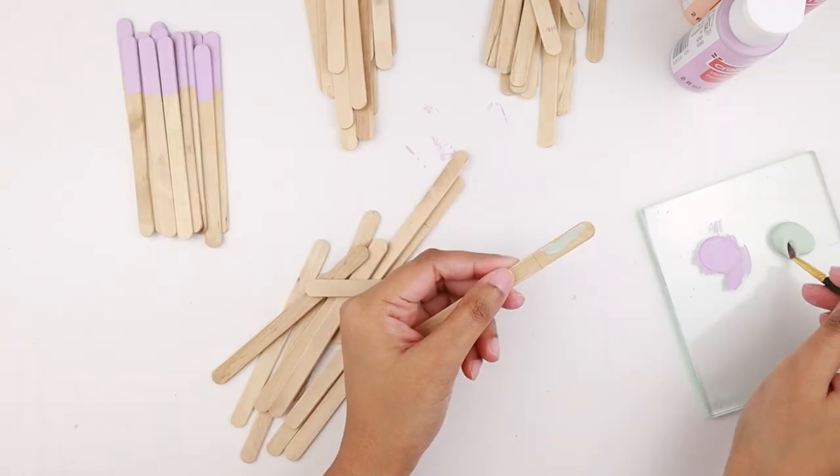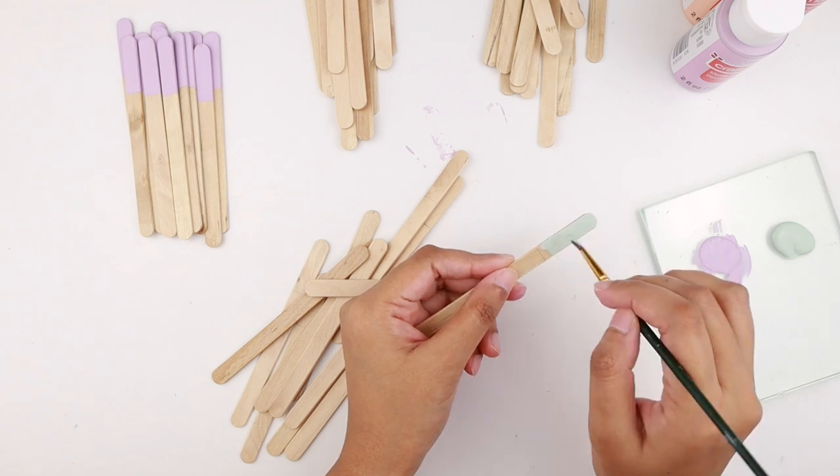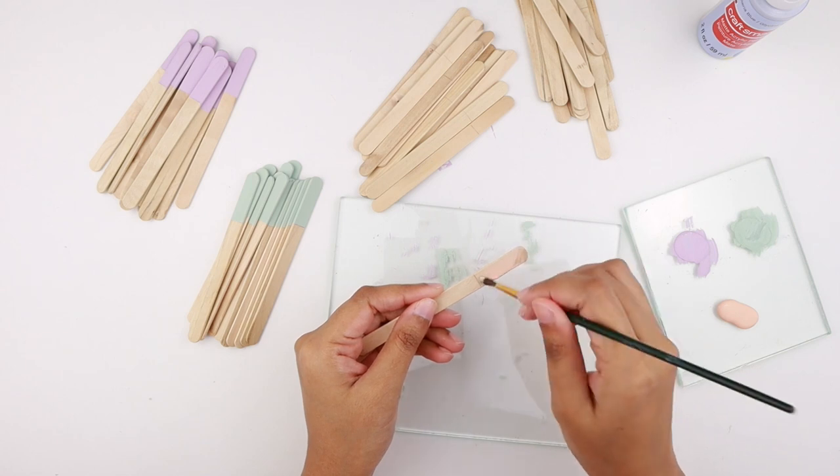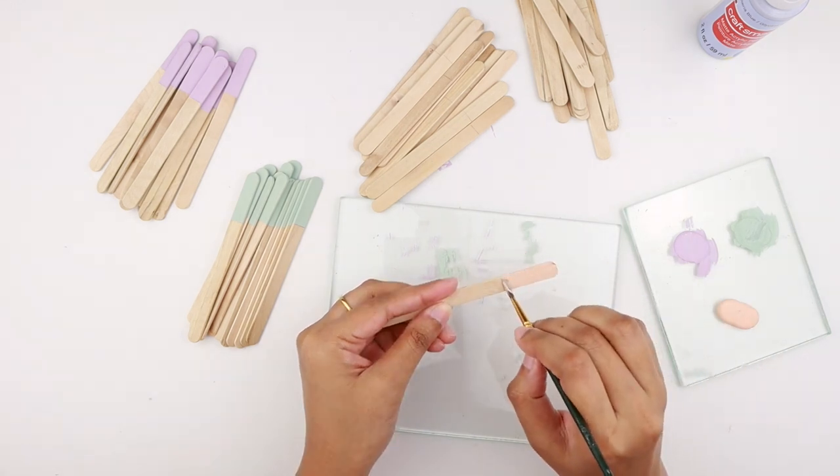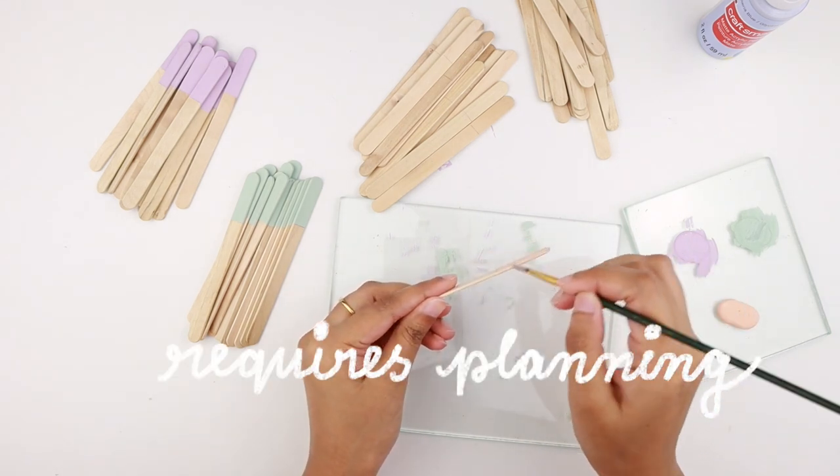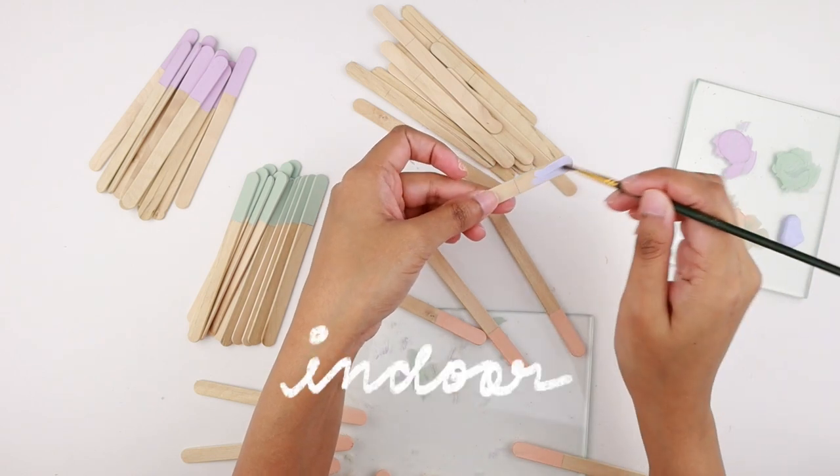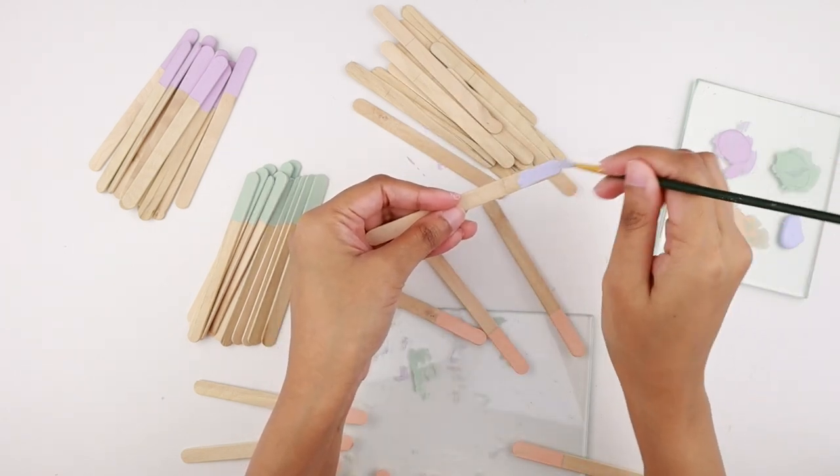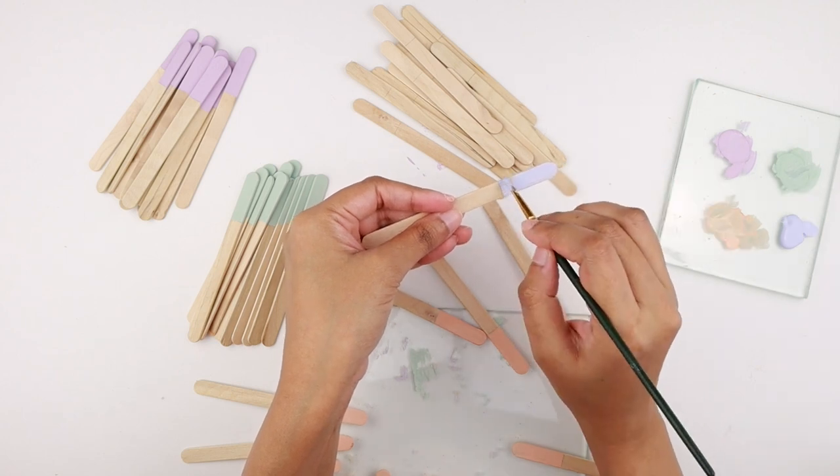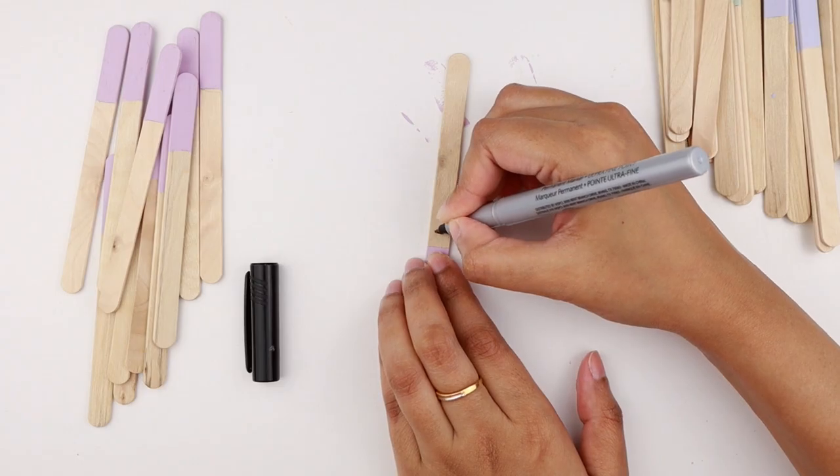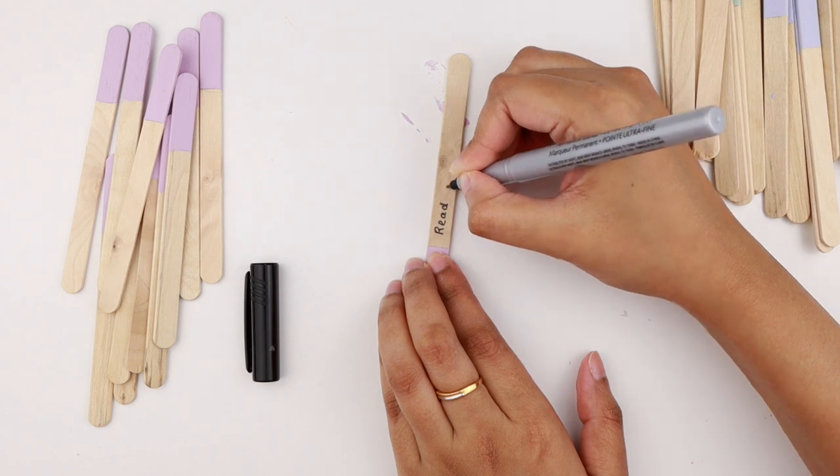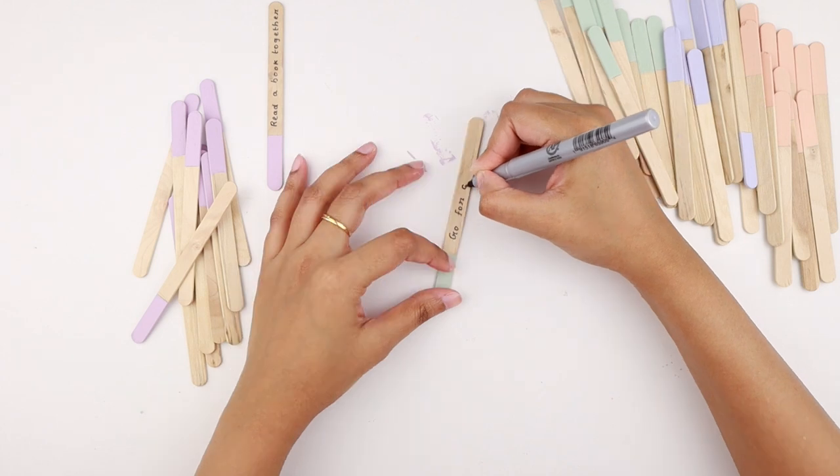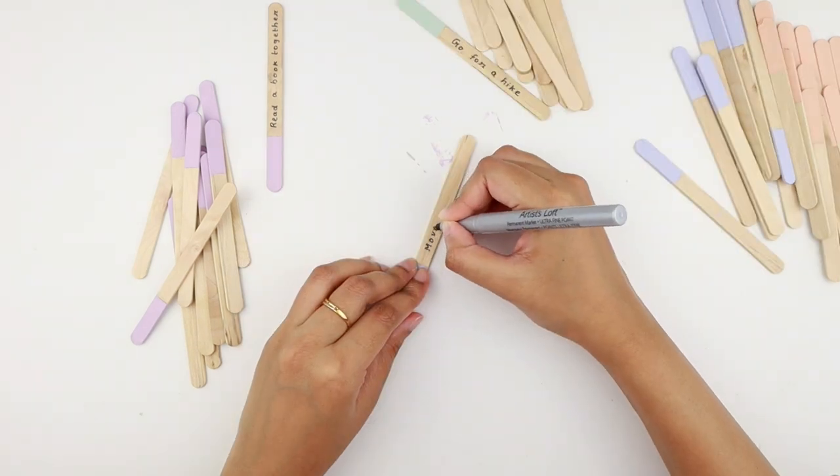For the next set of craft sticks, I used a light green paint. This were for outdoor date ideas. I painted the next set with a coral paint. This set was for date ideas that are required to plan. For the last set, which was indoor date ideas, I used this light blue paint. Once all the craft sticks were painted, I took a marker pen and wrote down all the date ideas based on the colors. This way I wrote down 52 date ideas divided into four groups.